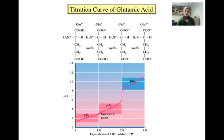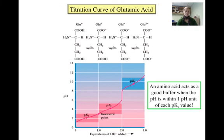Let's look at the titration curve for glutamic acid, or glutamate. Glutamate has an ionizable R group, which makes it distinctly different from glycine. As a result, it takes 3 equivalents of base to completely deprotonate the ionizable groups of glutamate. The three pKa values are reached when 0.5, 1.5, and 2.5 equivalents of base have been added, and the curve is relatively flat in three different regions, one at each pKa value. In general, there is a buffering zone within 1 pH unit close to each pKa value of an amino acid.